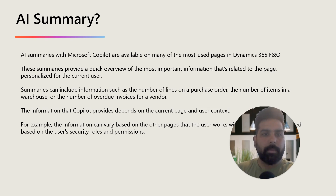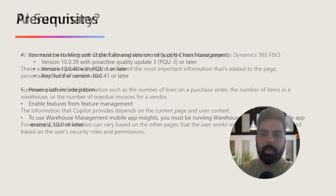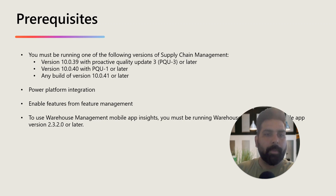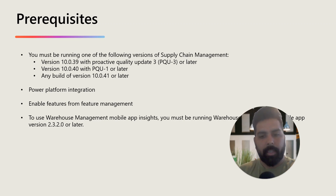Now, if you want to get this AI summary feature, let's talk about the prerequisites. You should be on build version 10.0.40 — that should be fine and the features should be enabled by default. If you are on version 40, you need to have PQ1 or later. If you are on 35 to 39, you should have PQ3 or later.